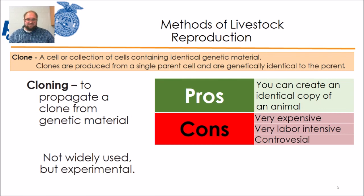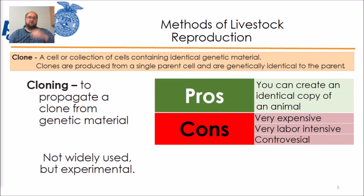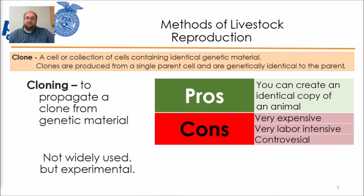You're going to have a few things you need to go over. I want you to know the definitions of these different reproductive methods: cloning, artificial insemination, embryo transfer, and natural breeding. I want you to be able to tell me what the positives — the pros — and the cons are for each. Thank you for watching. I will see you next time.